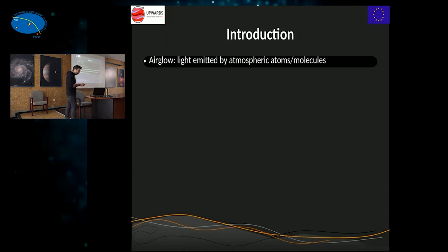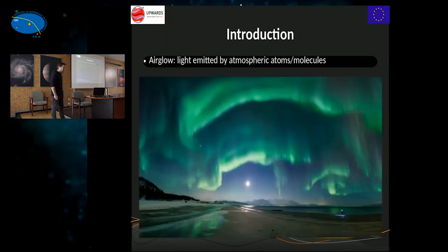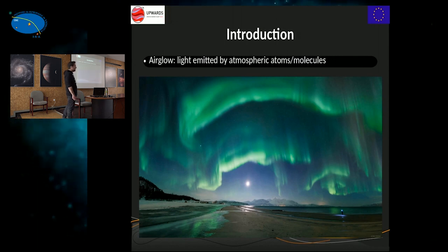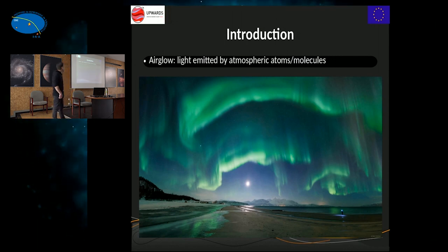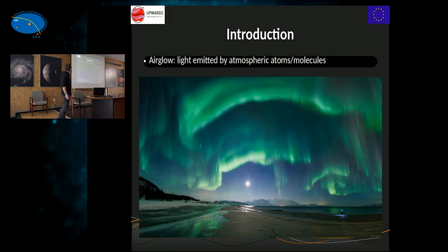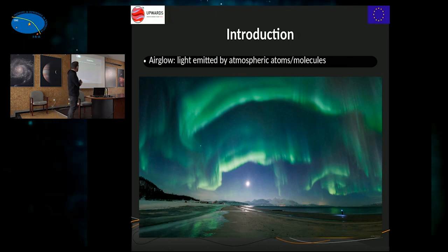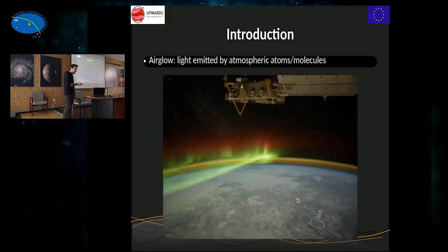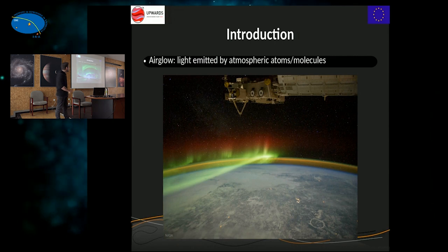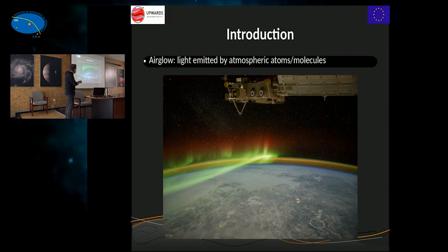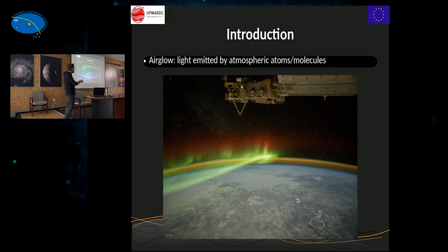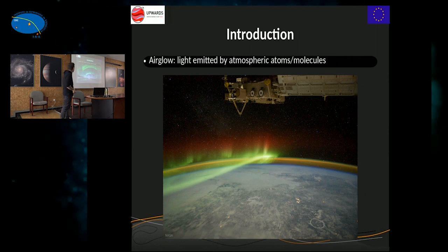We start at the beginning. What is airglow? Broadly speaking, airglow is just light emitted by the atmospheric atoms and molecules in our atmosphere. What probably comes to your mind is aurora, and that really fits the definition — that's light emitted by the atmosphere. But that's not all the light emitted by the atmosphere.